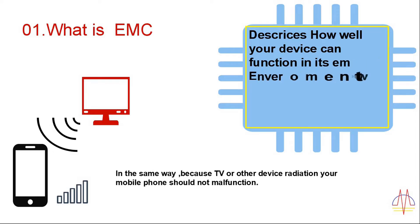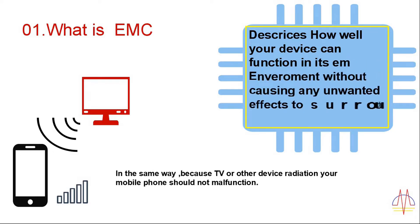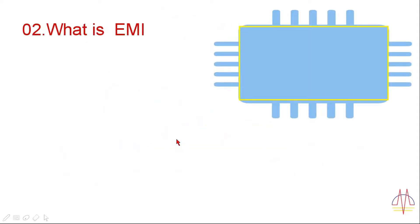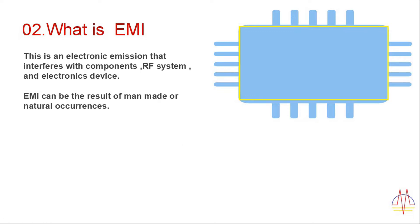EMC describes how well your device can function in its electromagnetic environment without causing any unwanted effect to the surrounding equipment. Your device should not emit radiation, and the radiation emitted by other devices should not cause malfunction of your device. This kind of phenomenon is said to be EMC. EMI is said to be a kind of noise signal.